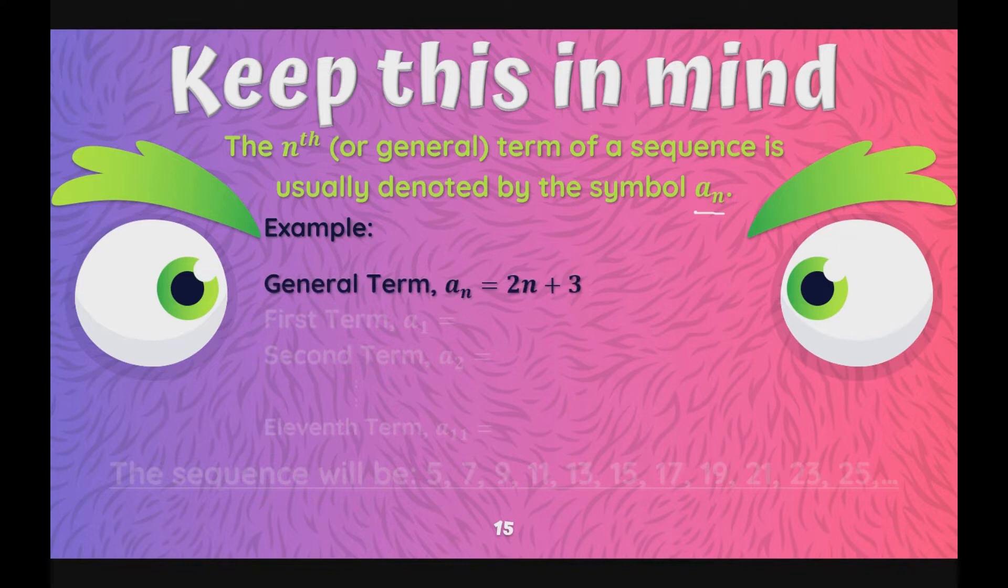When we say general term, ito yung parang pinaka rule or ito yung order, ito yung logical order na sinasabi natin na kung saan pwede lang natin ilagay yung number kapag sa sequence, kasali lang ang isang number sa sequence kapag nasunod niya ang pamantayan ng general term which is here in our first example is 2n plus 3. Ano yung sinasabi ni Sir Tare? For example,